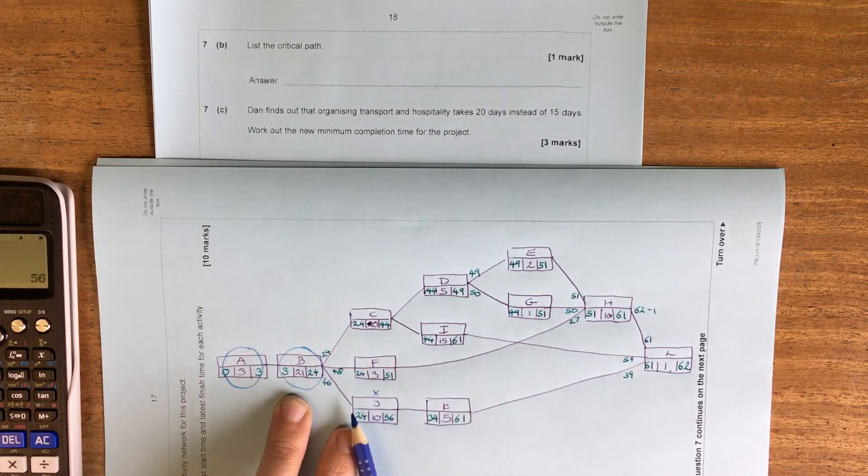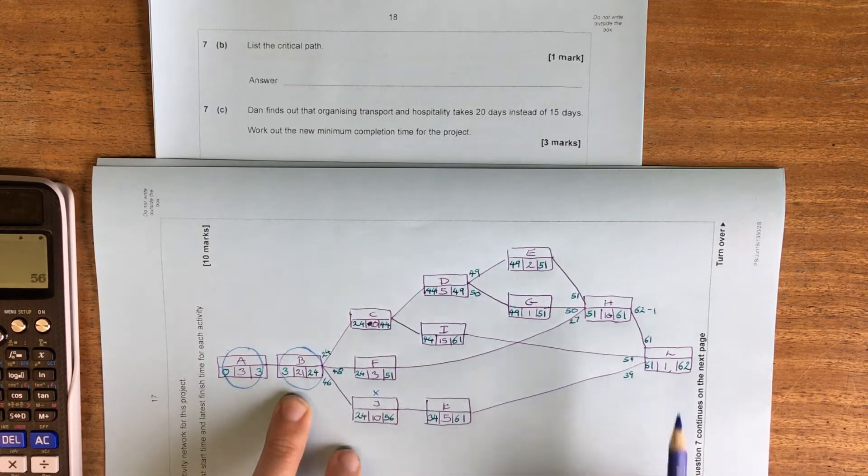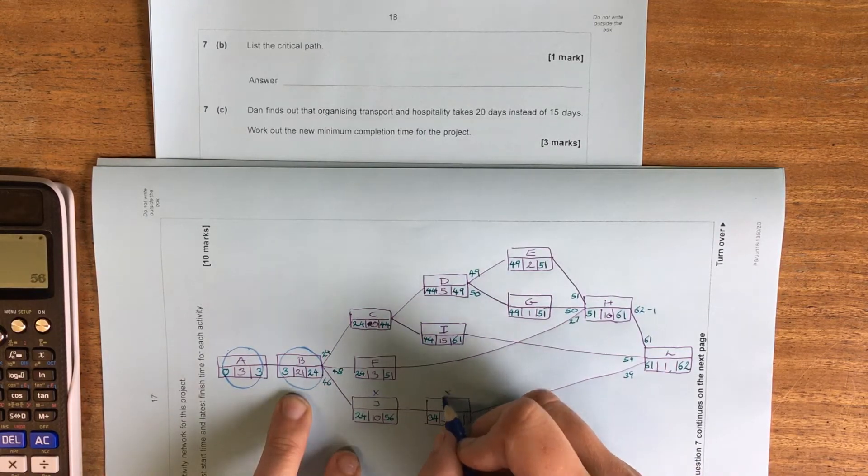Anything that's not critical on a branch means that the rest until it joins up again, also not critical.